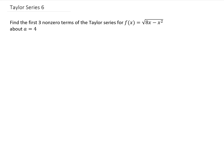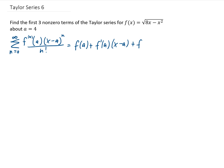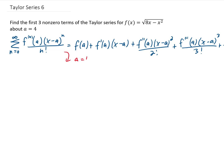Hello there. We're going to find the first three non-zero terms of the Taylor series for this given function about a equals 4. Let me write out the general Taylor series first. If we're given that the Taylor series is going to be centered at a equals 4, then we get the following.